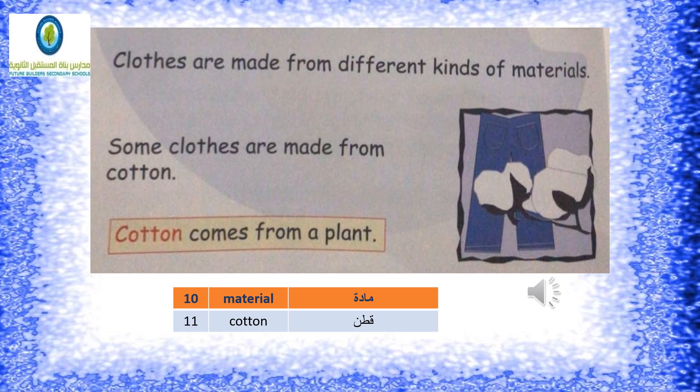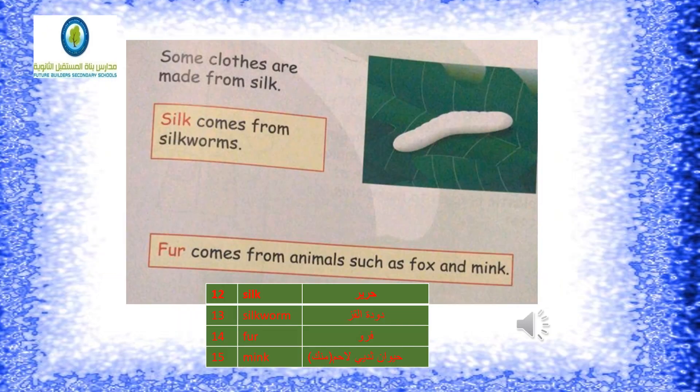Now, clothes are made from different kinds of materials. Some clothes are made from cotton, which comes from a plant. Some clothes are made from silk, which comes from silkworms. Fur comes from animals such as fox and mink.